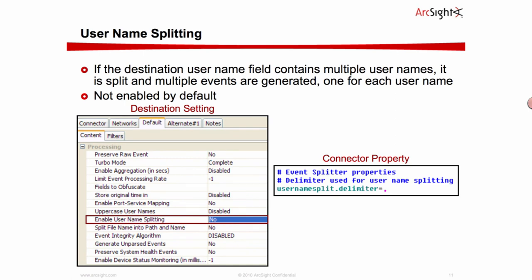There is another stage here to do with username splitting. This is very specific to certain situations: if you're getting a destination username field when parsed that contains multiple usernames — which can happen with certain log sources, for example where an administrator has created a batch of usernames — we want to split that down. There is an additional processing level for this. It's not enabled by default; you can enable it and define what the delimiter is, in this case a comma, defined in a connector properties file, and you can have those multiple usernames available to you.